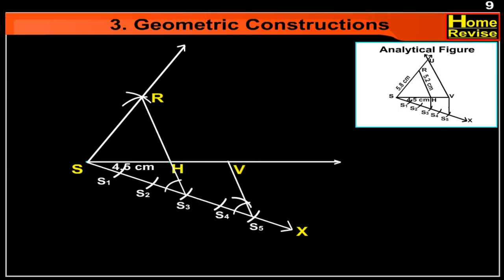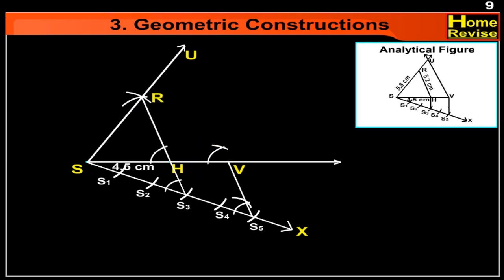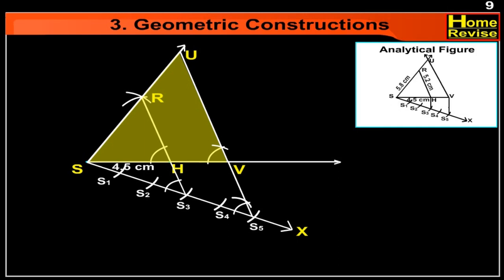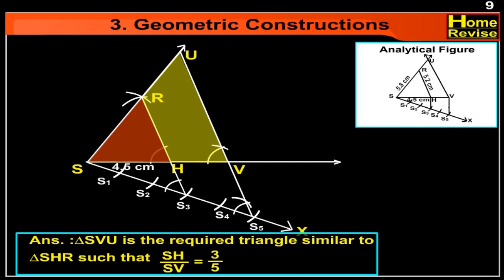Let us draw a line through B parallel to HR to meet SR produced at U. Therefore, triangle SVU is the required triangle similar to triangle SHR. The answer is triangle SVU is the required triangle similar to triangle SHR such that SH upon SV is equal to 3 upon 5.